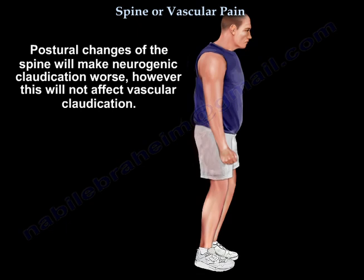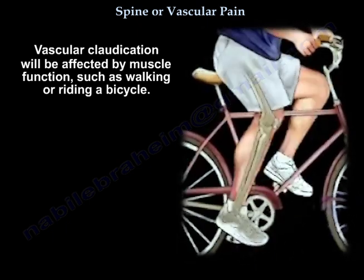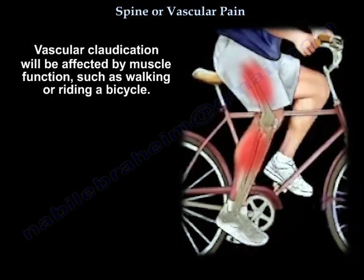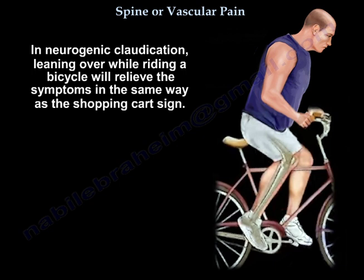Postural changes of the spine will make neurogenic claudication worse. However, this will not affect vascular claudication — vascular claudication will be affected by muscle function, such as walking or riding a bicycle. In neurogenic claudication, leaning over while riding a bicycle will relieve the symptoms in the same way as the shopping cart sign.